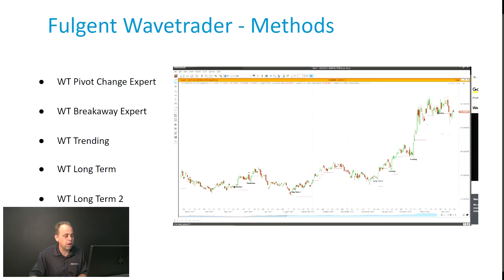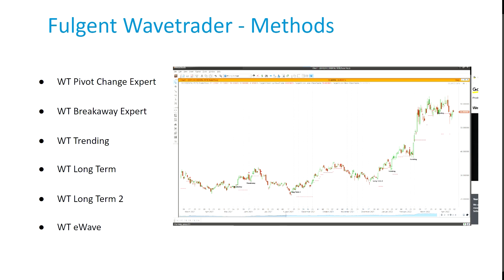Even though it is one expert, it does include eight total systems for MetaStock. All of these methodologies and entry methods are built into the software. They include pivot change entry signals, the breakaway expert, trending, long-term one and long-term two, and the Elliott Wave. In that one methodology, you're going to have all eight different individual experts as well.